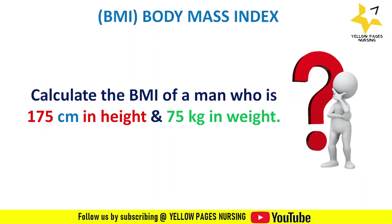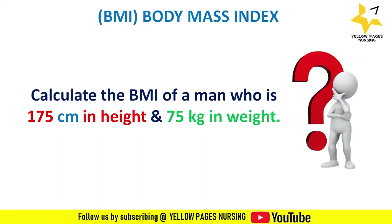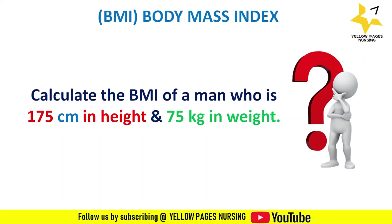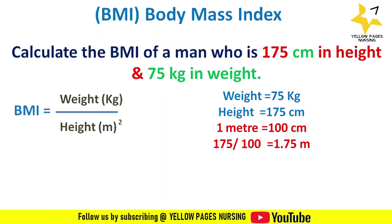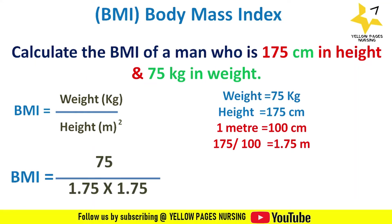Next example: calculate the body mass index of a man who is 175 centimeters in height and 75 kilograms in weight. Here height is given in centimeters, so we first convert to meters. Since 1 meter equals 100 centimeters, we divide 175 by 100 to get 1.75 meters. Applying the formula: BMI equals 75 divided by 1.75 multiplied by 1.75, which gives 24.4. As per the table, this man falls under the normal weight category.